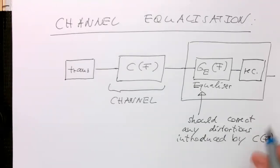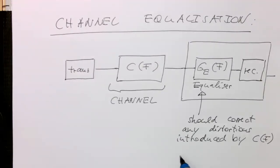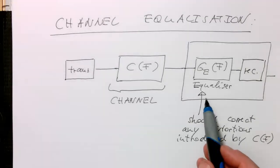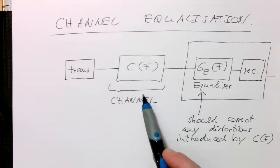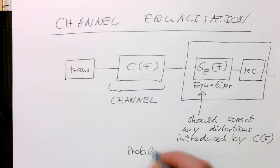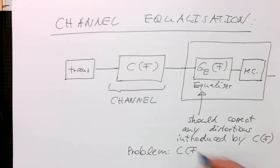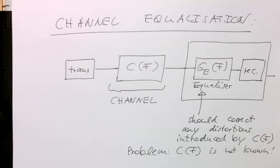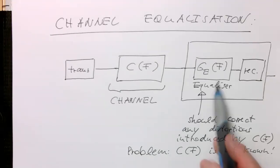Now the problem is we usually don't know much about C(f). We need to somehow design this equalizer without knowing exactly what C(f) is. The problem is C(f) is not known — at least not in a closed form that we can express as a mathematical formula, so that we can create a mathematical equalizer.